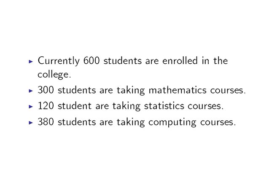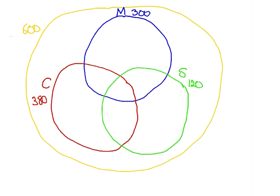There are 600 students in total enrolled in the college. 300 of those are Mathematics students, 120 are Statistics students, and 380 are taking Computing courses. So there should be 380 in the C circle, 300 students in the blue circle, and 120 students in the Statistics circle, with 600 students altogether.